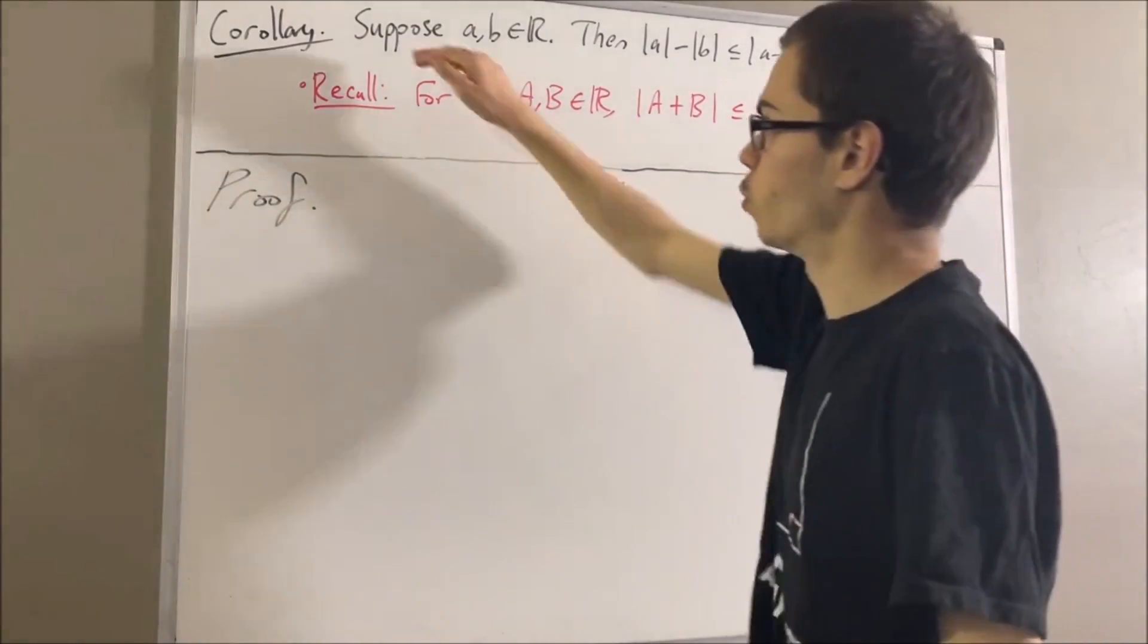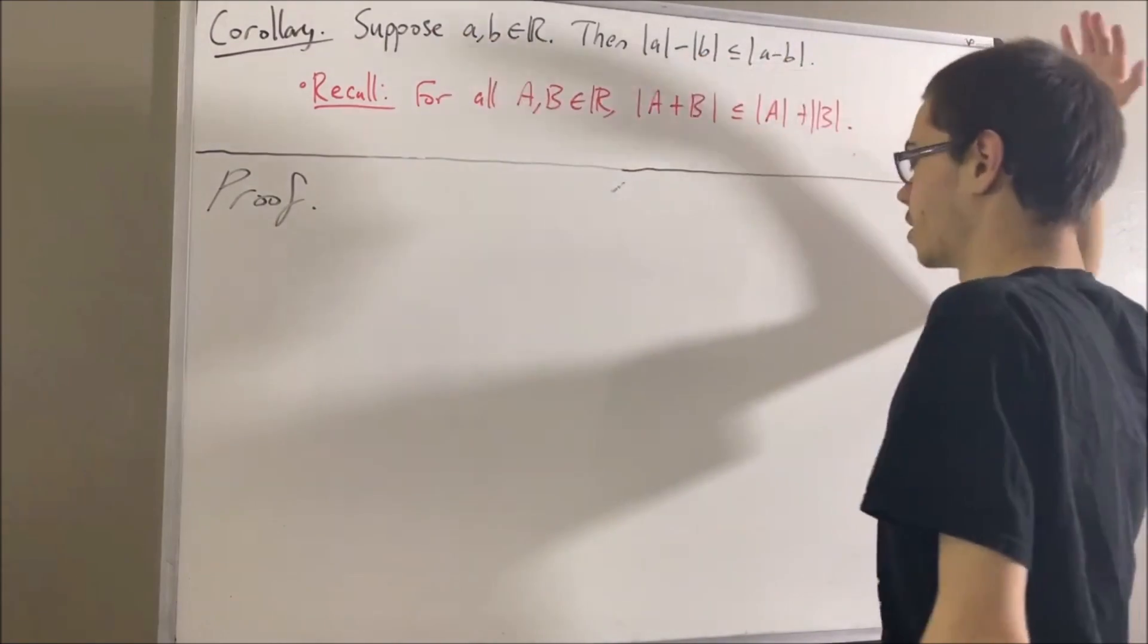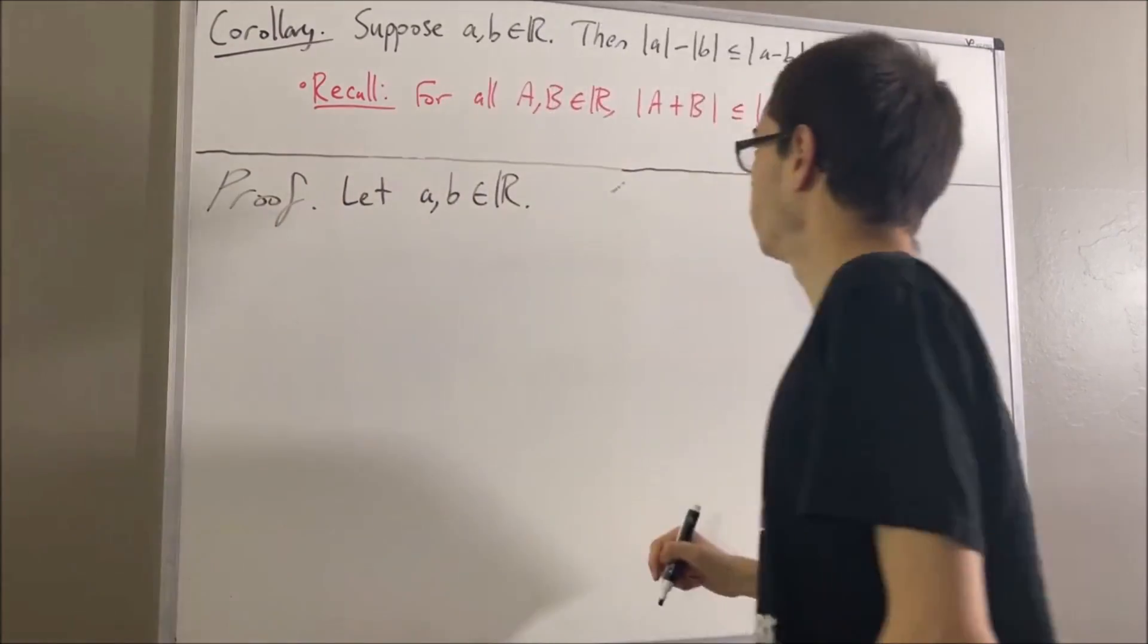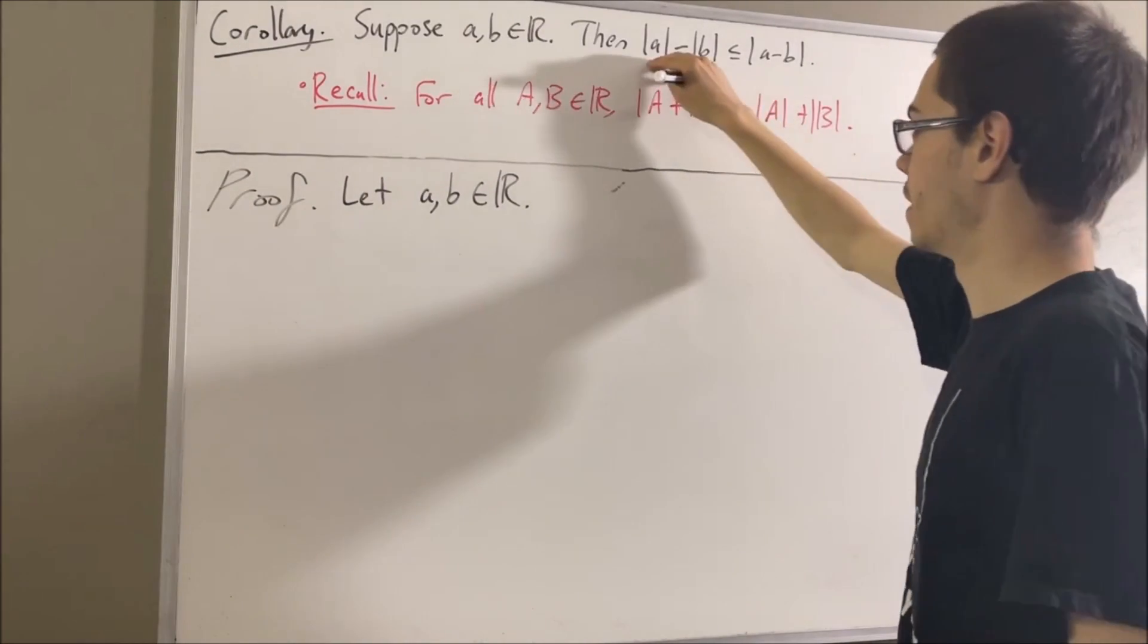So now let's get into proving this corollary. To start the proof, let's give ourselves two arbitrary real numbers A and B. Our goal is to prove this inequality.